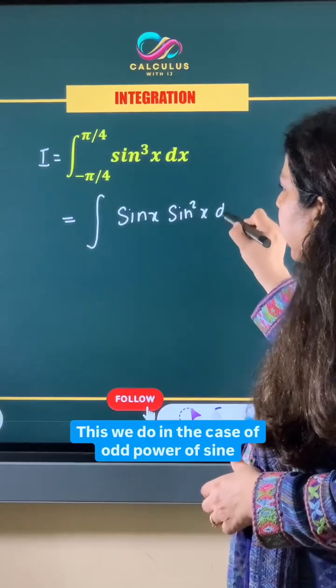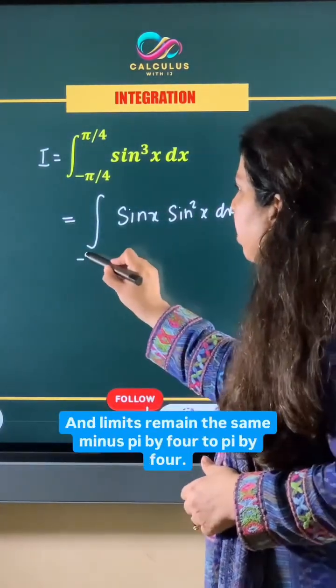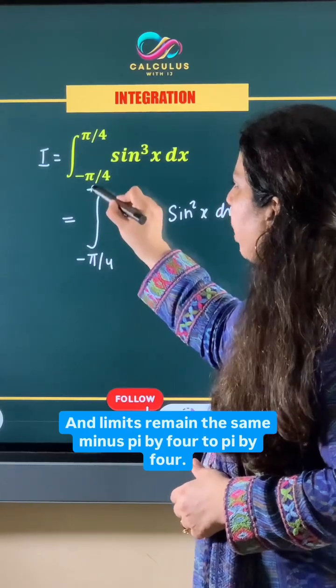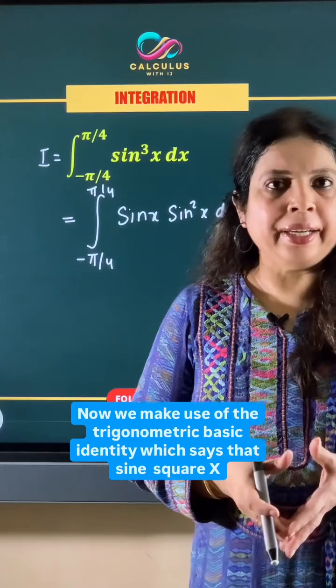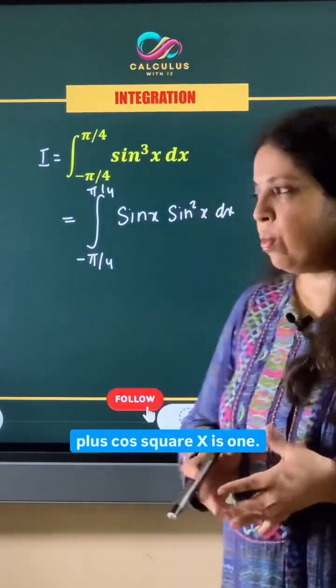We do this in the case of odd power of sine and limits remain the same minus pi by 4 to pi by 4. Now we make use of the trigonometric basic identity which says that sine square x plus cos square x is 1.